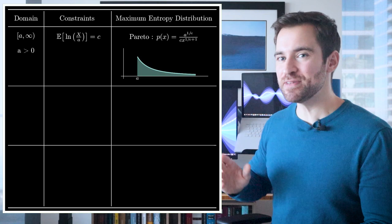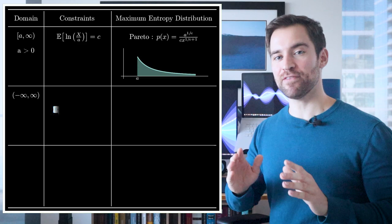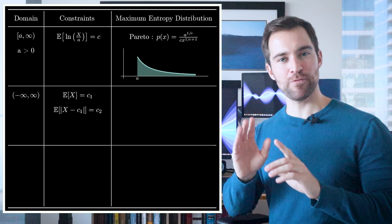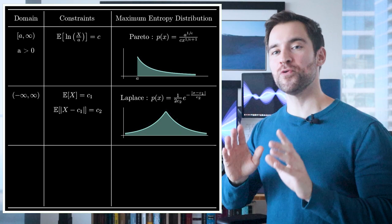Let's do something similar to the normal distribution. Let's say the domain is the whole real line again, and we know the average. But this time, we know the average absolute difference from that average. Then what? Well, in that case, we get the Laplace, another famous distribution.